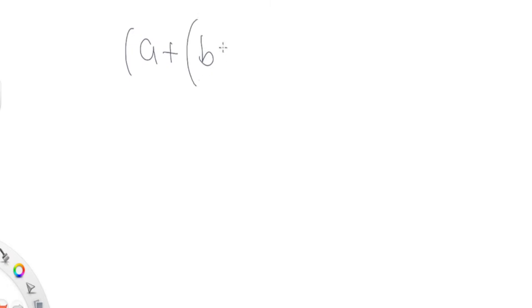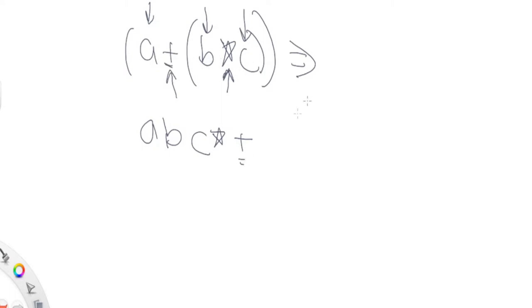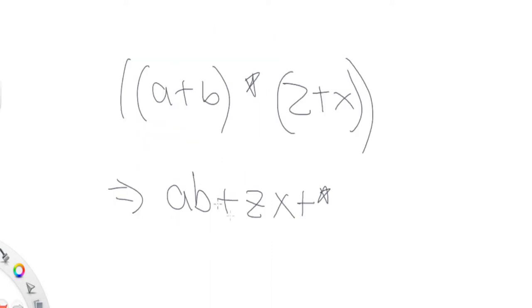Let me show you an example. In the first example, we have `a + (b * c)`, and we want to transform this expression. The output gives us `a b c * +`. Basically, the letters a, b, c are printed out first. Then the multiplication is printed because it's between the inner brackets — that parentheses comes first. And then later the addition is placed afterwards.